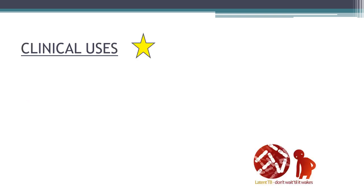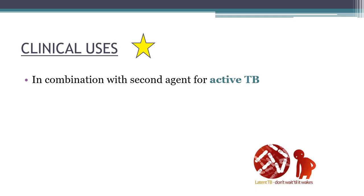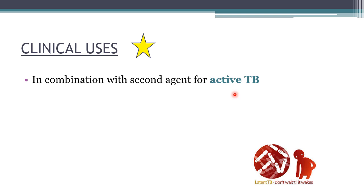Rifampin has both anti-mycobacterial and other antibacterial clinical uses. It is used in combination with a second agent for active tuberculosis. None of these drugs is given as a single agent for active tuberculosis — they are always given in combination therapy to prevent rapid resistance development. It is also used to treat atypical mycobacterial infections and leprosy — basically all kinds of mycobacterial infections.